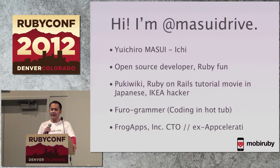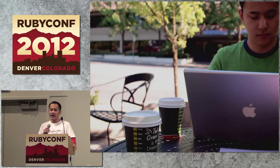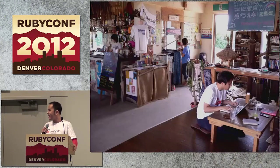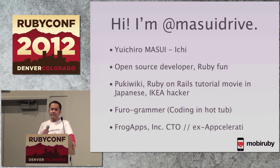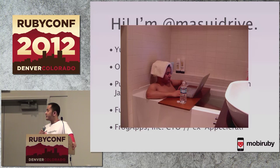My Twitter account and GitHub account is Masidrive. I really love programming and writing code anytime, anywhere, especially with the Ruby language. I write code anytime. I'm known as a programmer who codes while in the hot tub — 'furo' means hot tub.